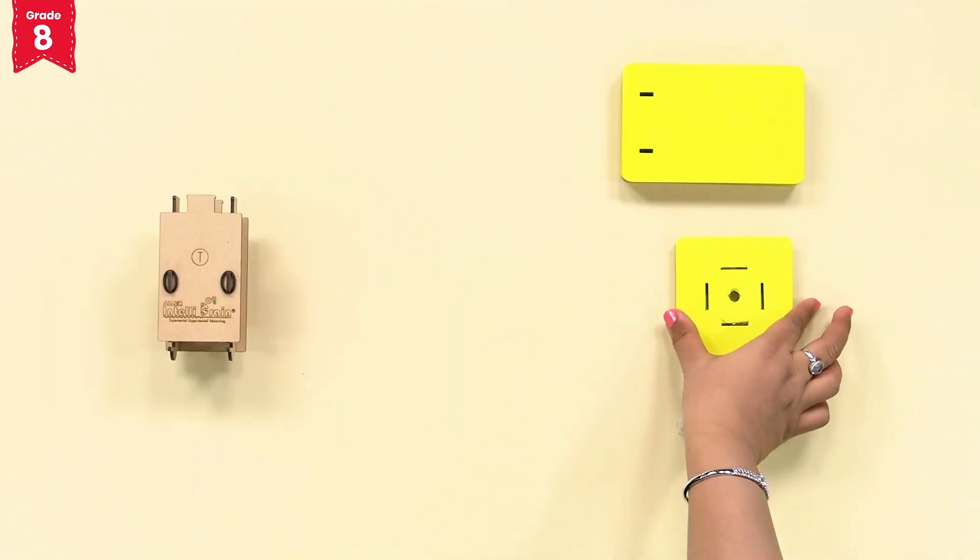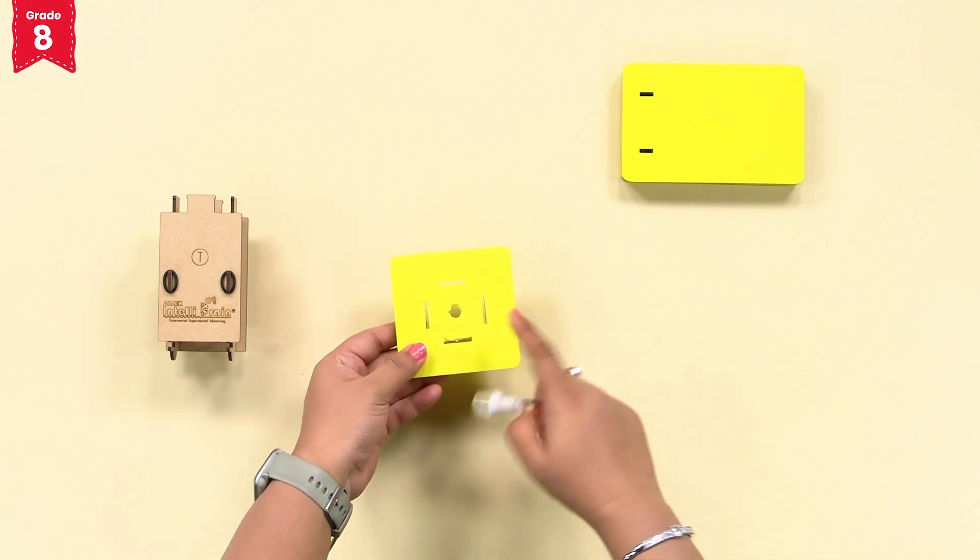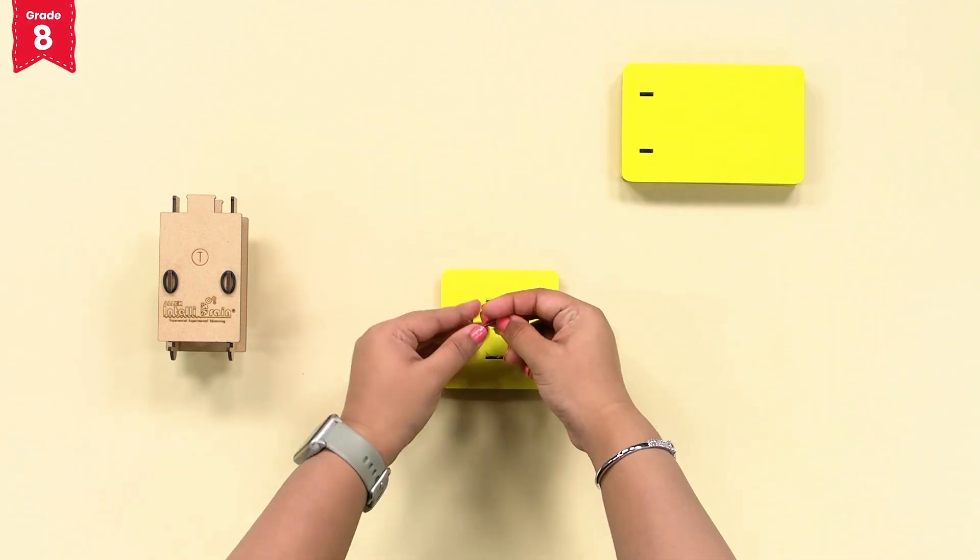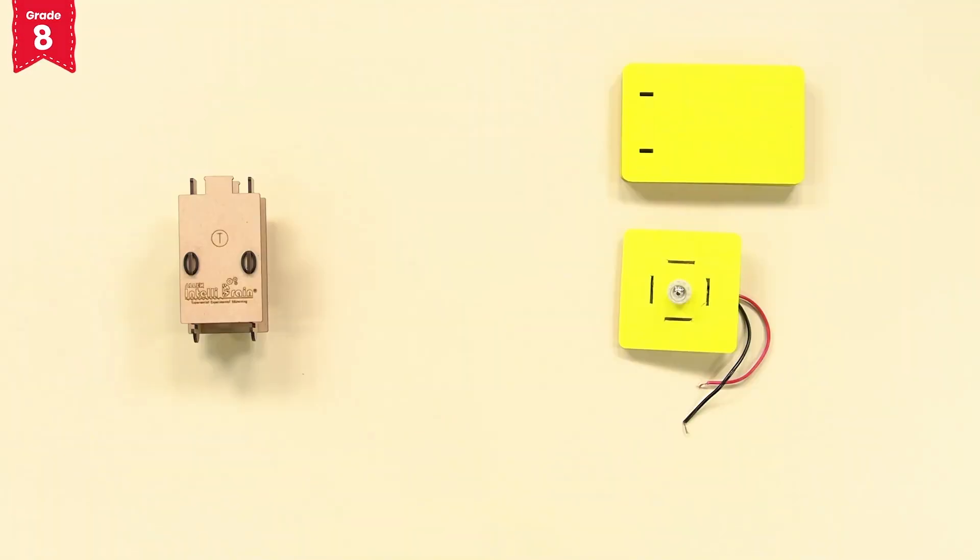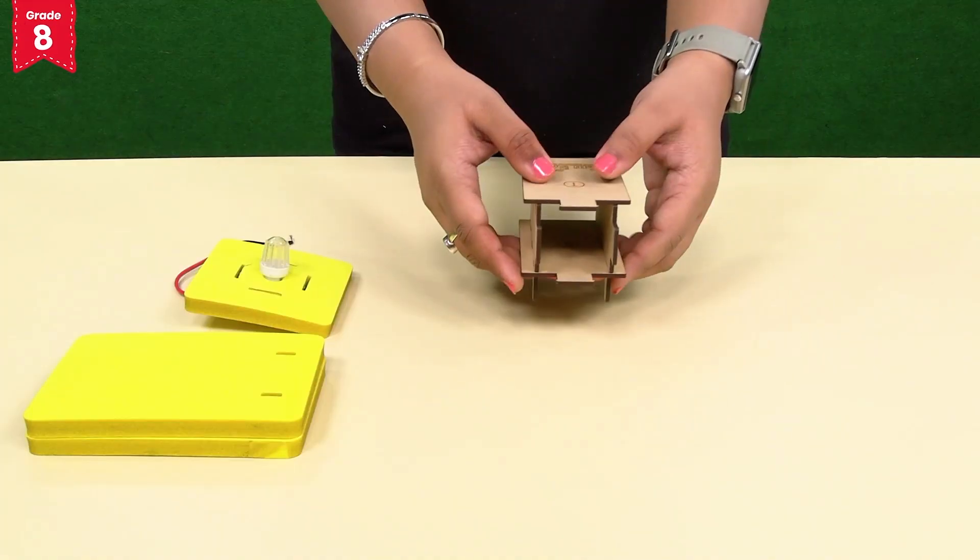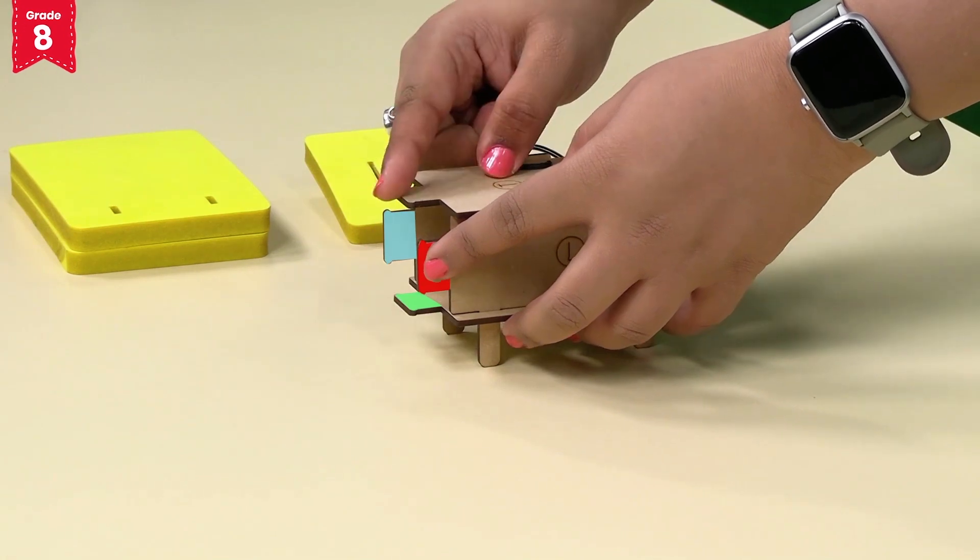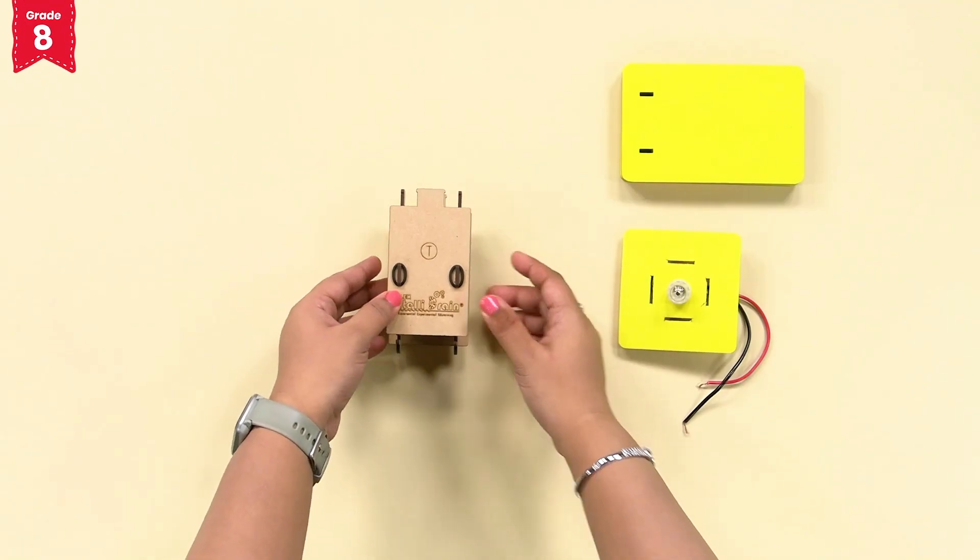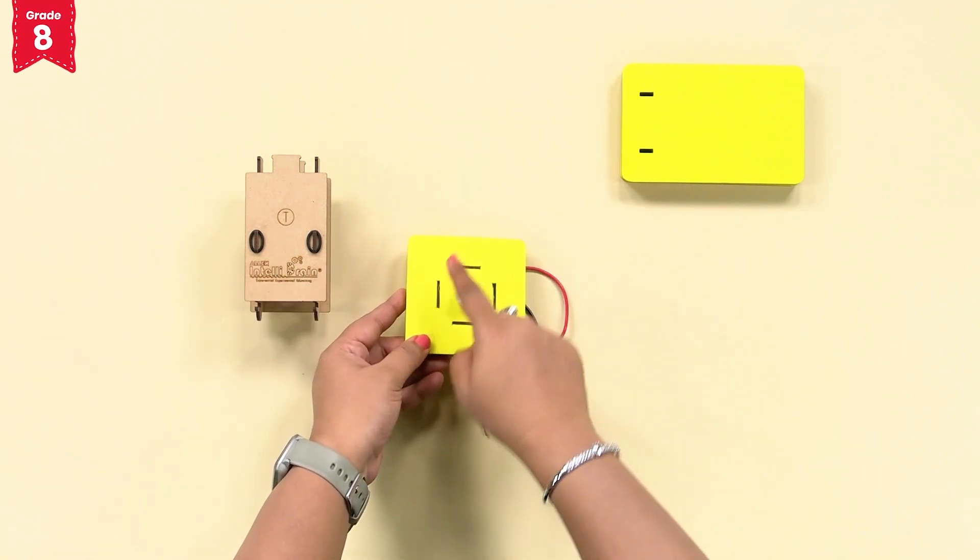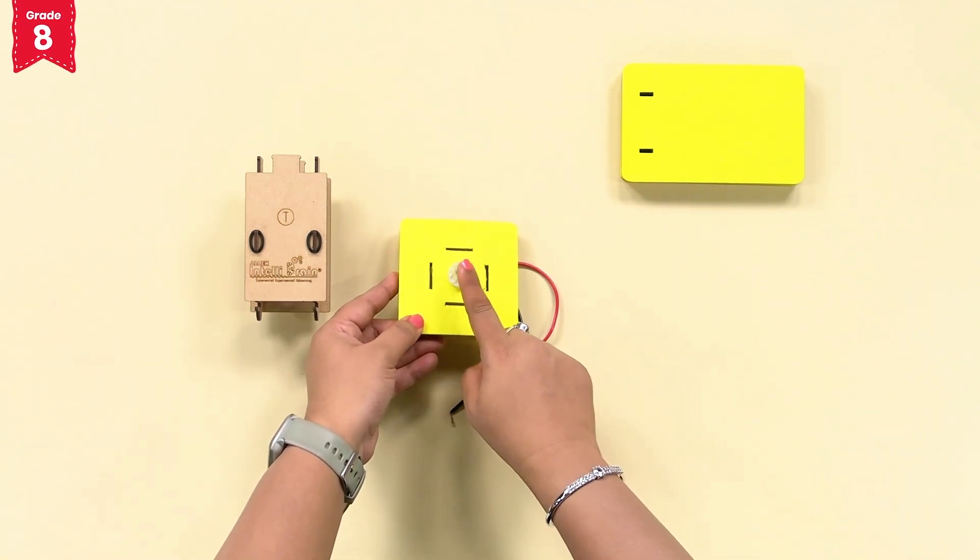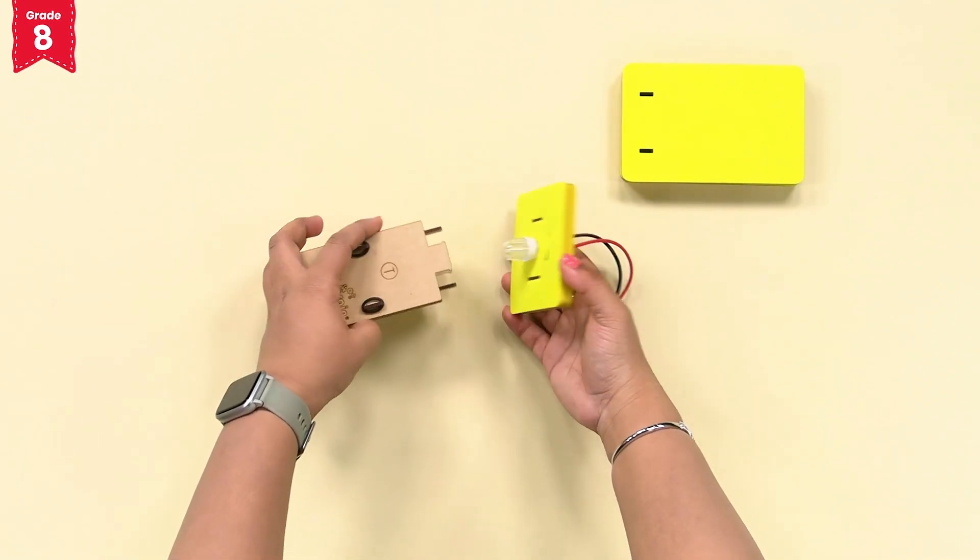Take the small foam piece and insert the LED light into this central hole like this. Now, insert the extended parts of the plates L, R, B and T into the slits of the small foam piece in such a way that the LED light fixed into the foam piece goes inside the structure like this.